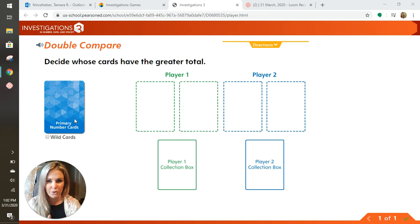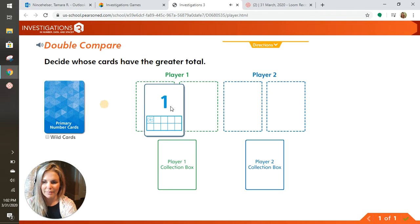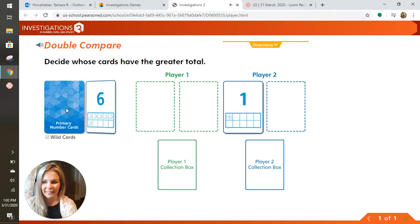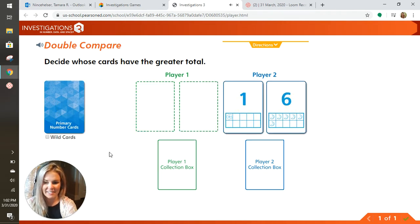So first I'm going to flip over two cards and I'm going to put them under player two, that's me. Got one and six. Now it's your turn.